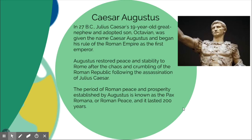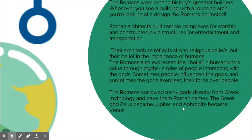Caesar Augustus began his rule of the Roman Empire and restored peace and stability to Rome after the turmoil following Julius Caesar's assassination. Once established as emperor, they had 200 years of peace. For a society known for its wars and conquests, having just gone through two civil wars, 200 years of peace was really welcome. A lot of art was created during that time, called the Pax Romana — the time of Roman peace.